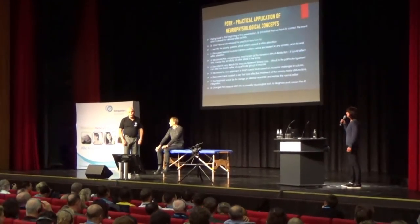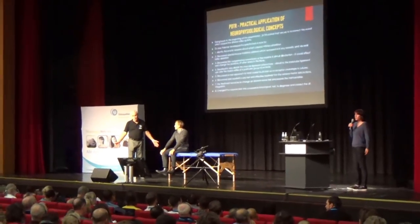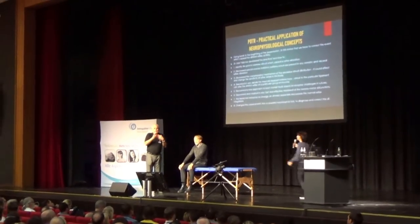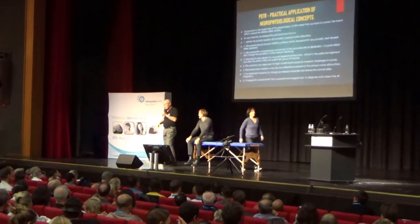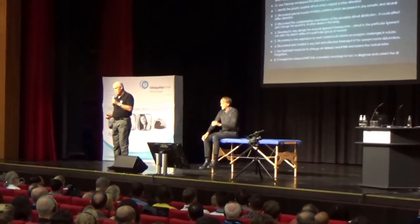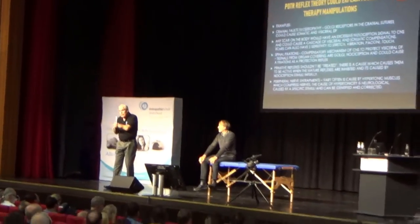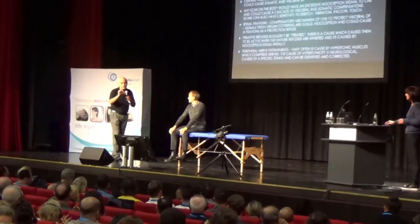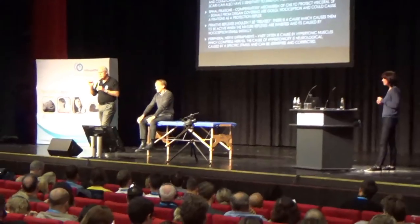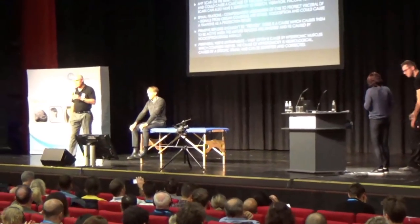In PDTR language, this is a dysfunction of the Golgi receptors in the ligament. Fascia has a great number of receptors including many Golgi. The problem could come from fascia, but why focus only on fascia? We have receptive fields everywhere. Golgi are in fascia, tendons, and ligaments, and every single one has its own specific associated muscles — each specific receptor has a specific inhibition pattern.